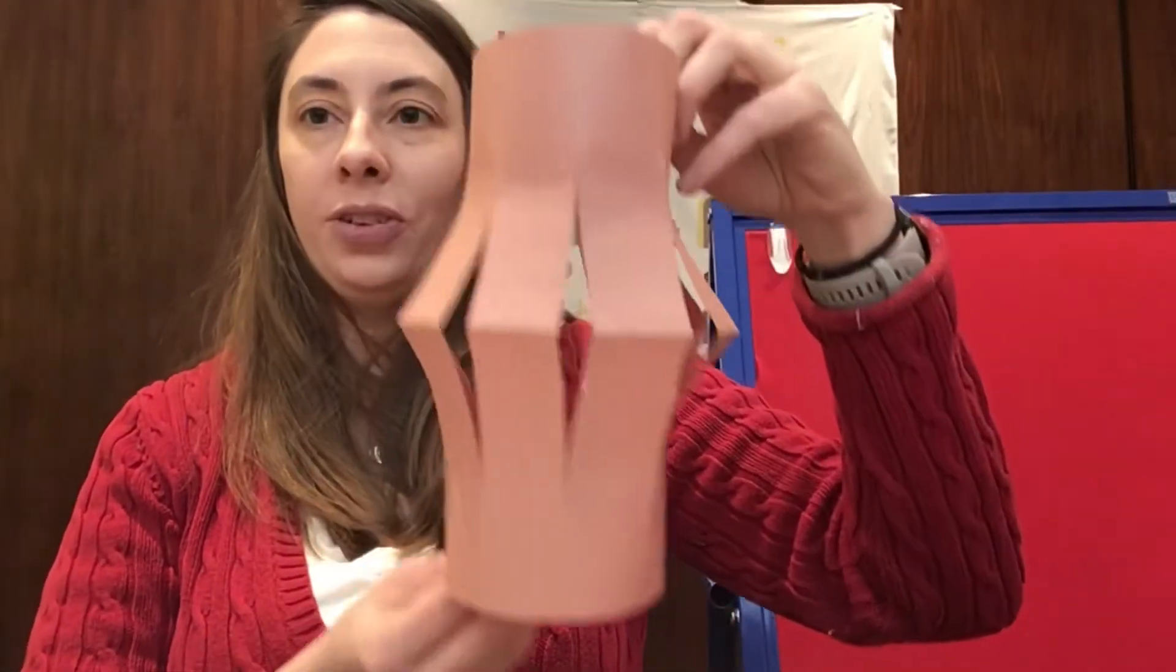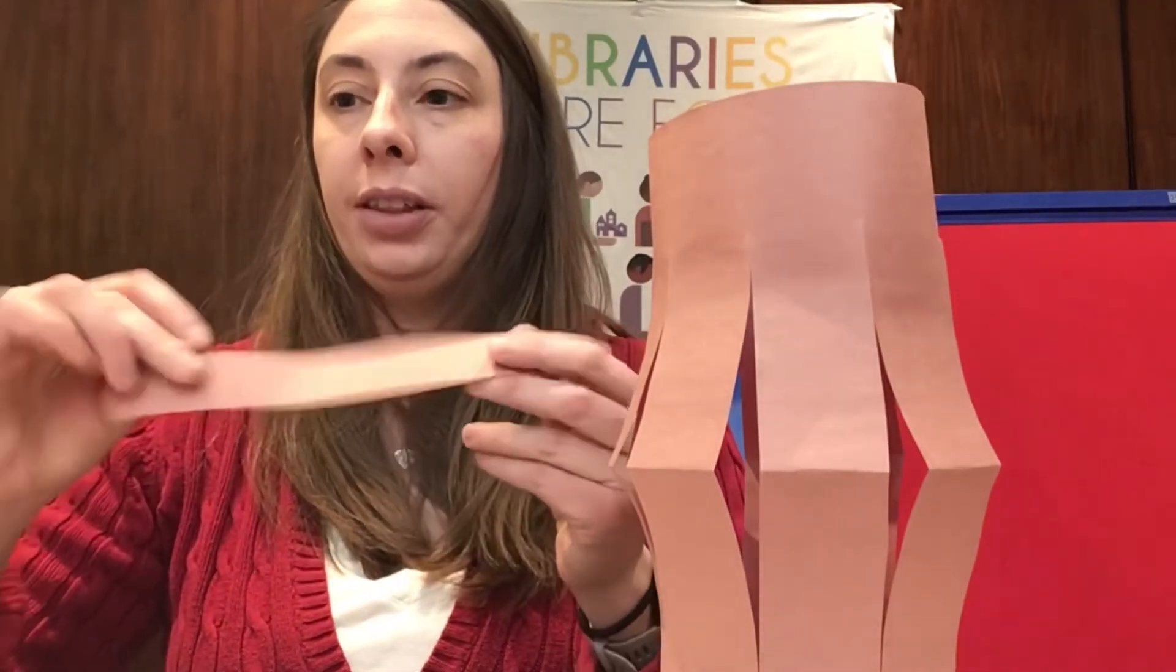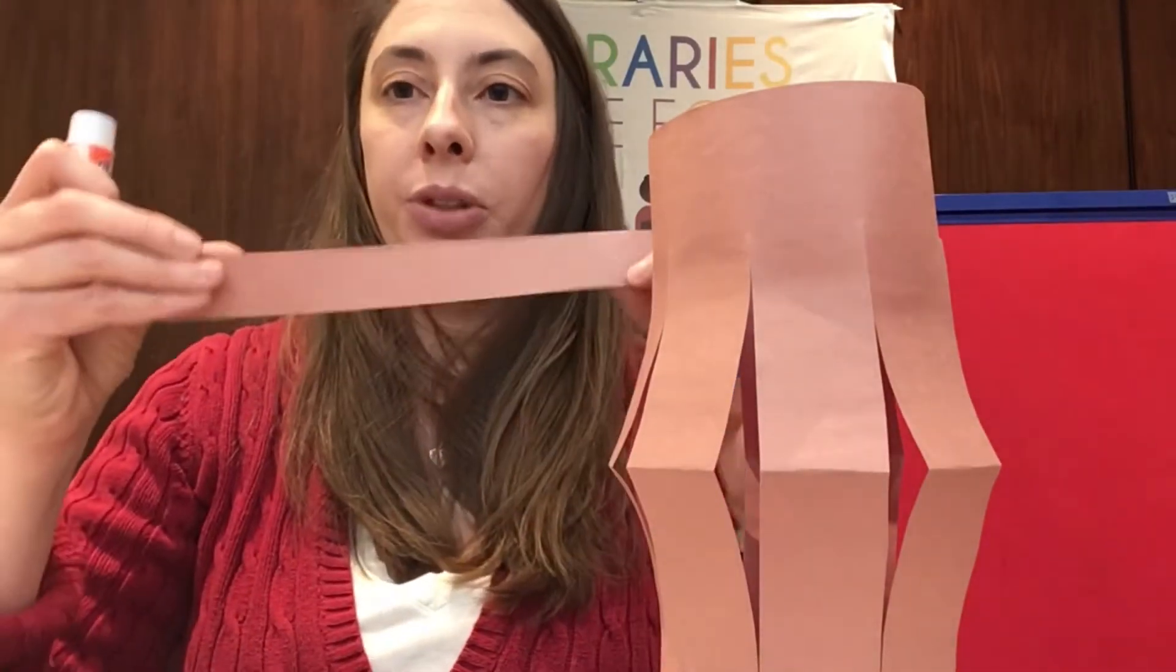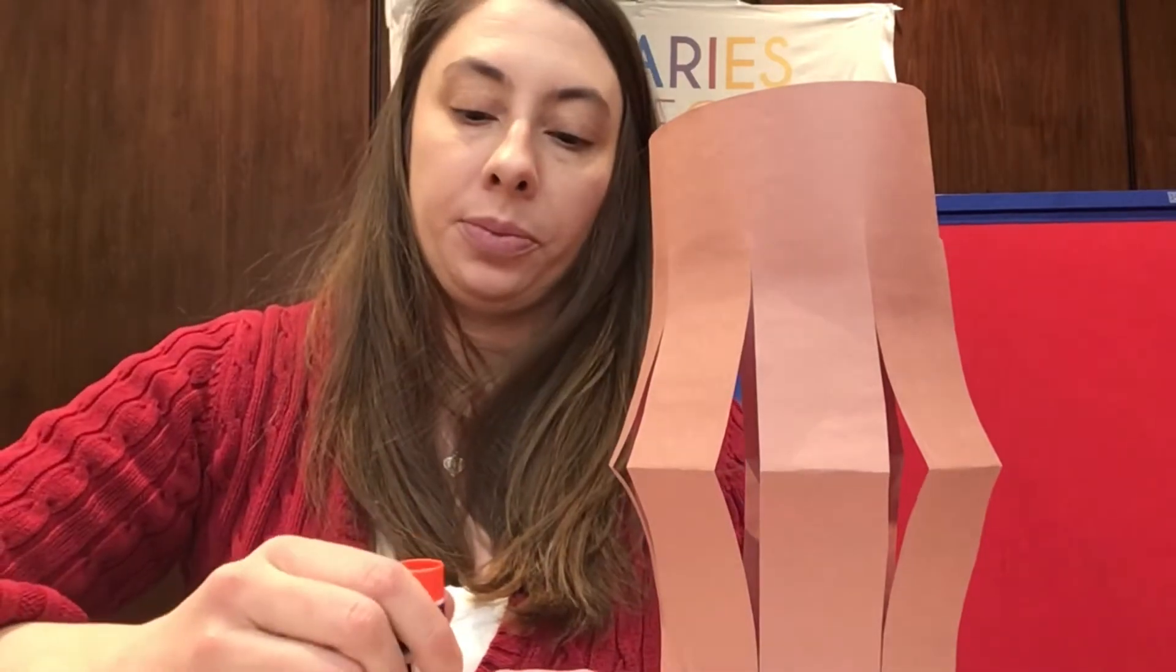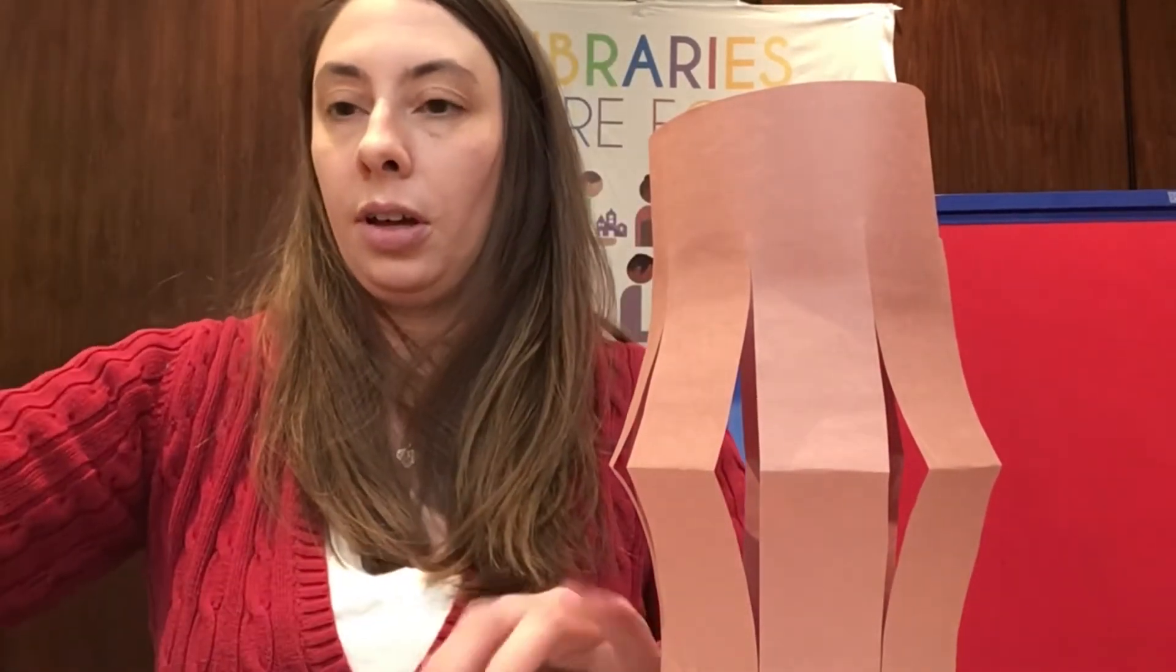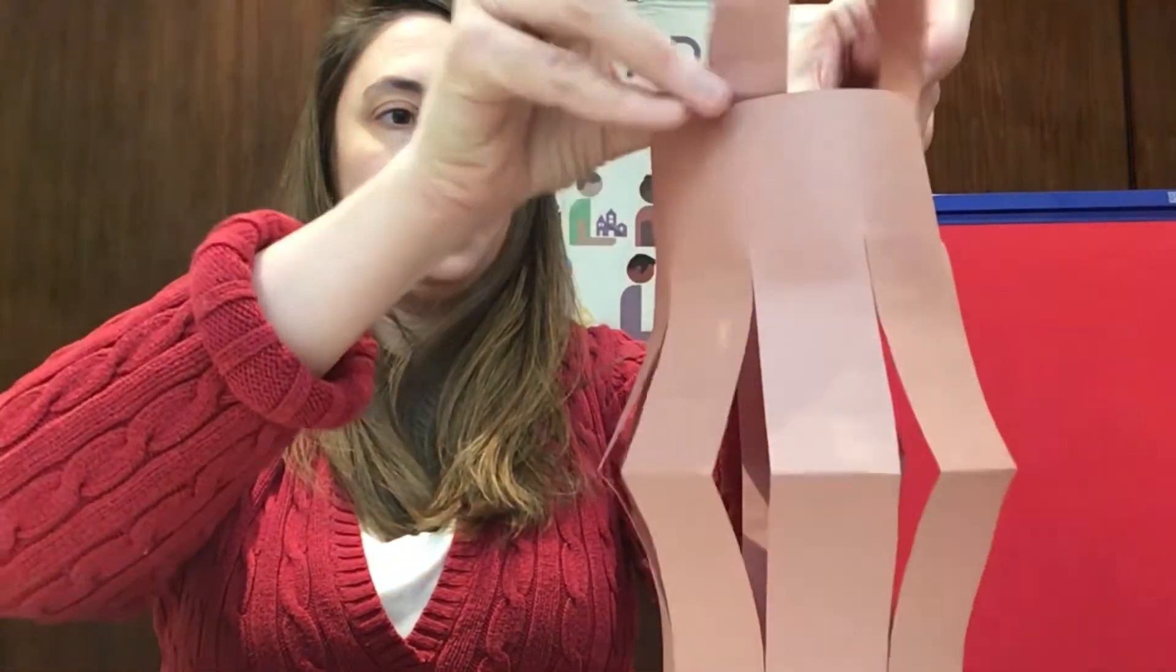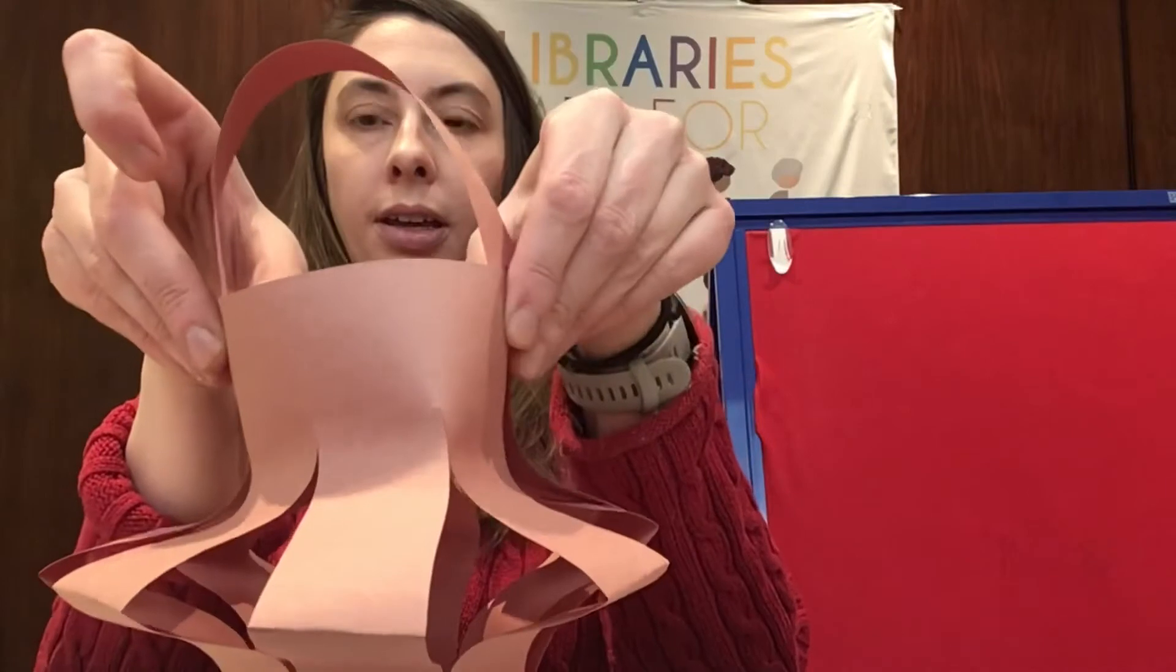So now that you have your lantern, you can take the strip that's given to you in the kit and apply glue to each corner. Like this and then attach it through the inside at the top. Like that.